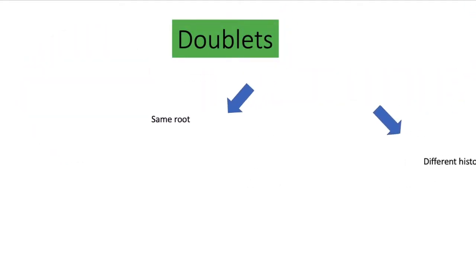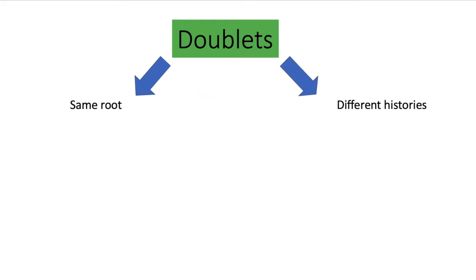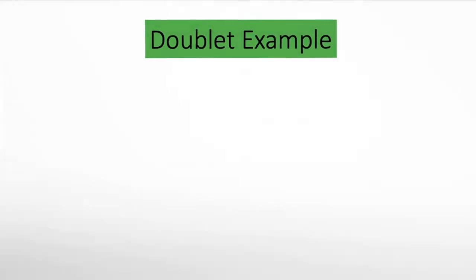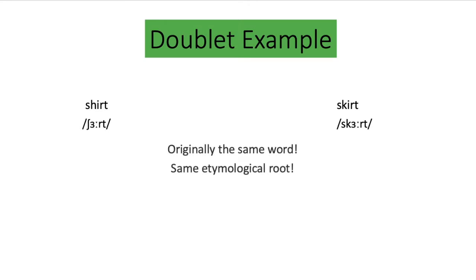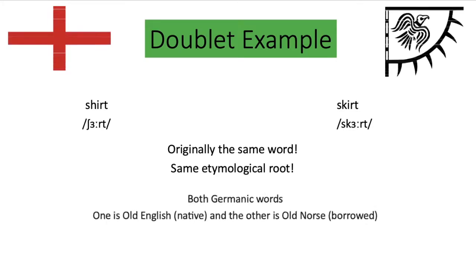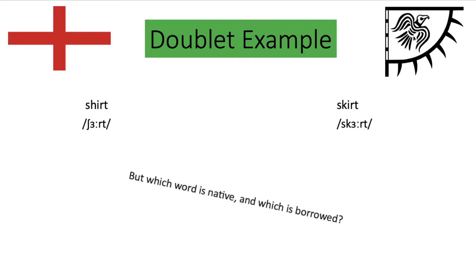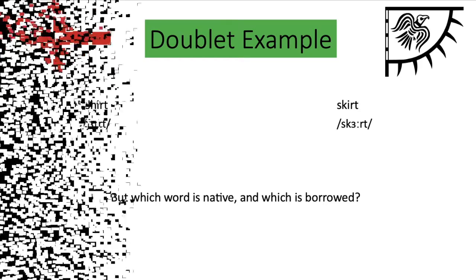But let's go back to doublets. Doublets share the same root but have different histories, and they have similar meanings because they share that same root. Here's an example: shirt and skirt. They look quite similar and were once the same word — they have the same root. Both were Germanic, but one was Old English and native, and the other was Old Norse and borrowed. But which is native and which is borrowed?